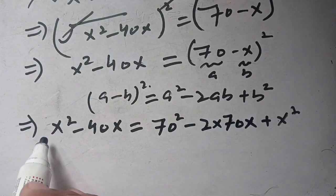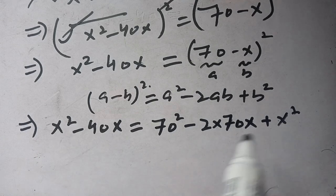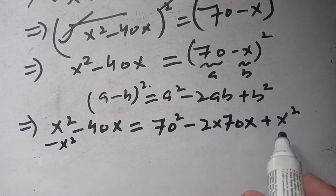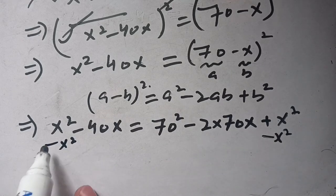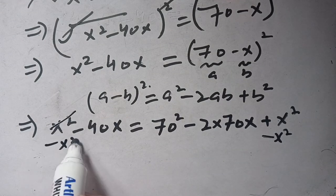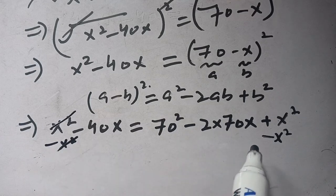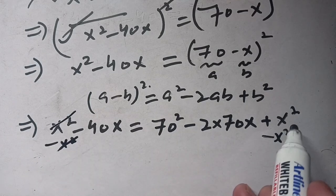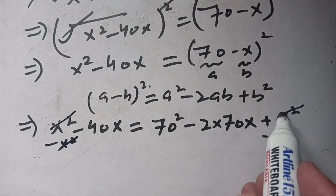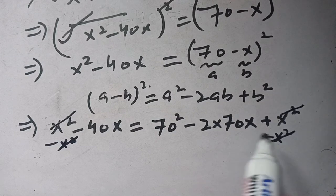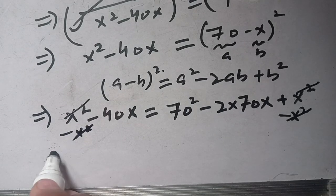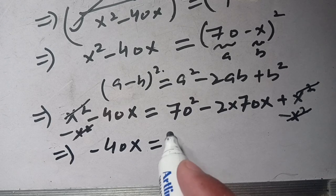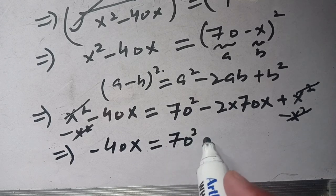Here we have x² on the left hand side as well as on the right hand side. We subtract x² from both sides. The x² terms cancel out, and on the left hand side we have only minus 40x, it is equal to 70² minus 140x.